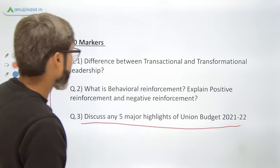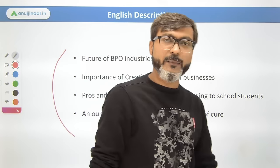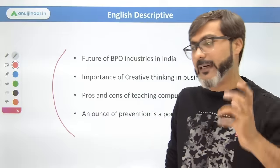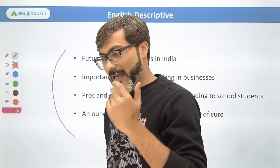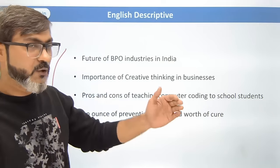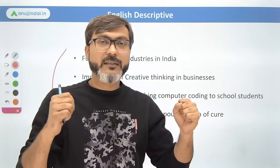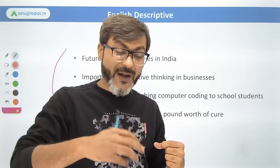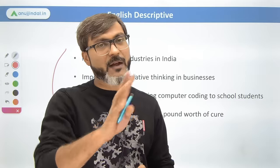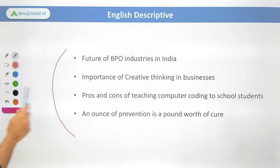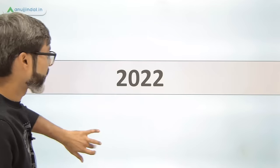In English descriptive for RBI Grade B, essays are generally from current topics related to finance, economics, and social issues. The knowledge you gain while studying ESI, FM, and current affairs is enough for writing essays. Whatever material you have collected while preparing covers the essay topics well. These were the essay topics for 2021.